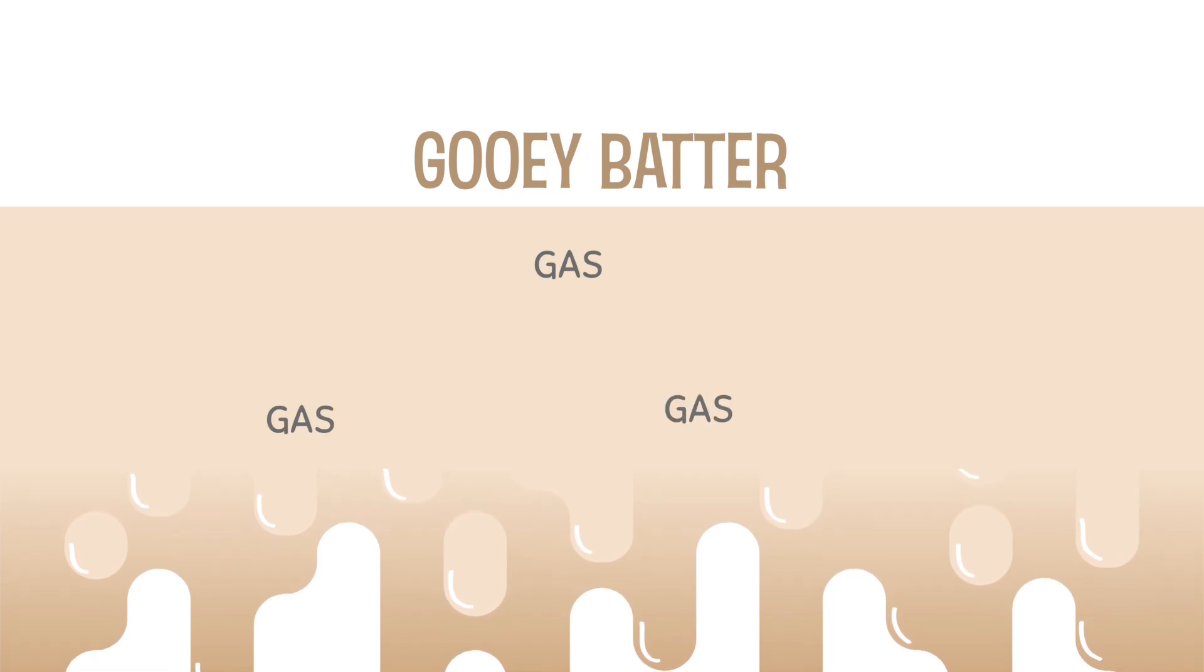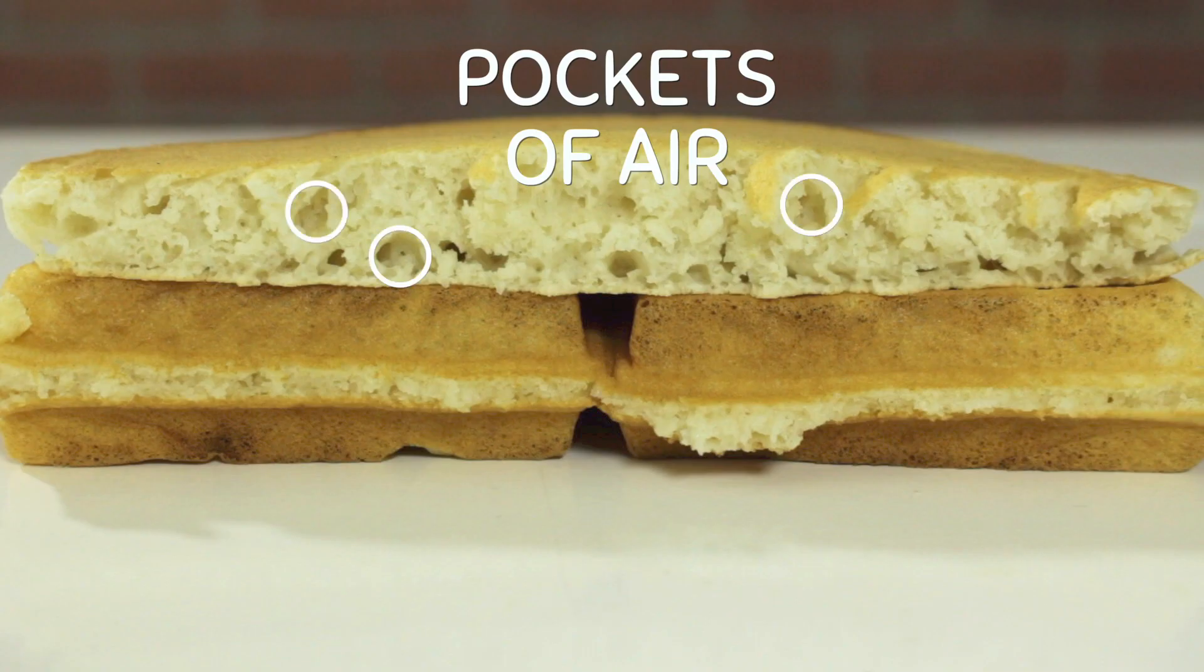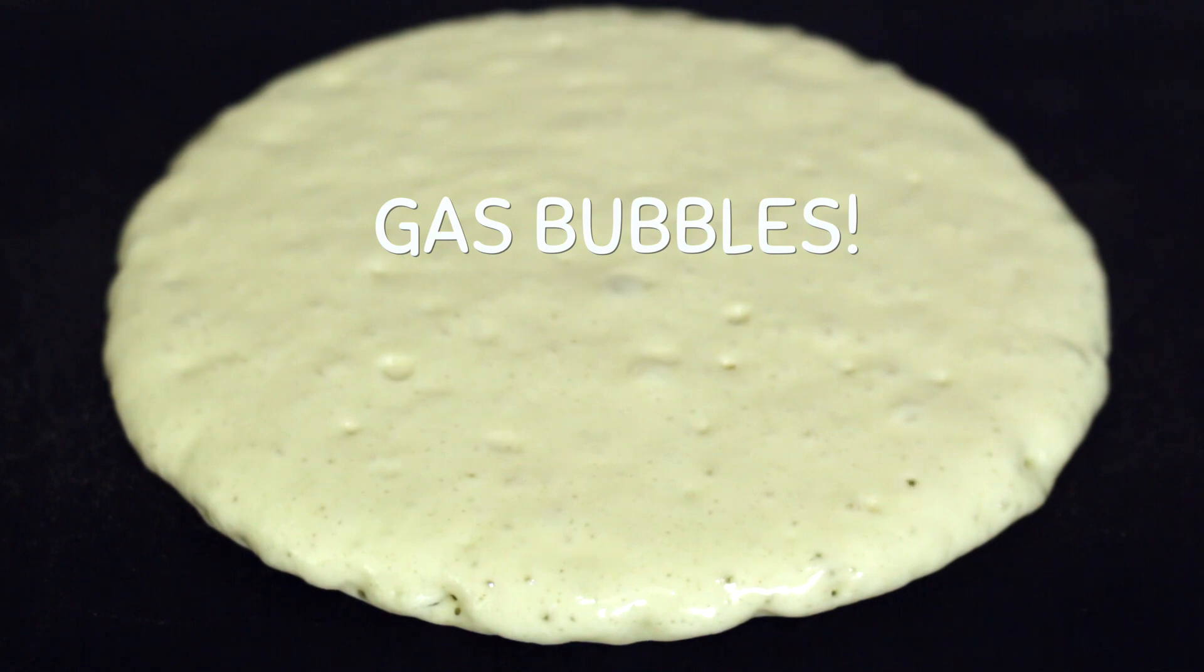When mixed with gooey batter, those gas bubbles made from the reaction get stuck in the batter, creating little pockets of air. That's what makes these foods spongy and fluffy.